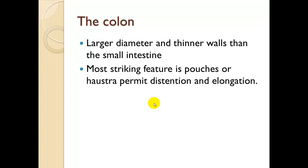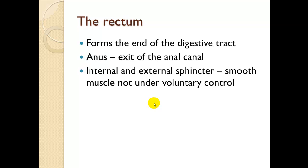The colon has a large diameter and thinner walls than the small intestine. The most striking feature is pouches called haustra, which permit distention and elongation to store fecal material. This is the body's last chance to adjust water in the fecal matter, so a lot of water will move in and out of the large intestine. The rectum forms the end of the digestive tract and the anus is the exit on the anal canal, with internal and external sphincters made of smooth muscle not under voluntary control.